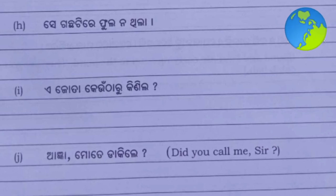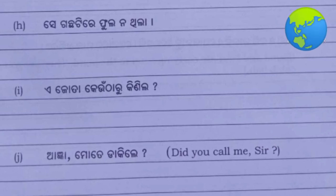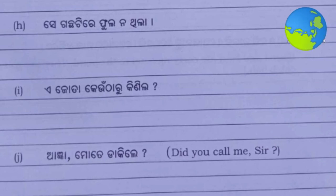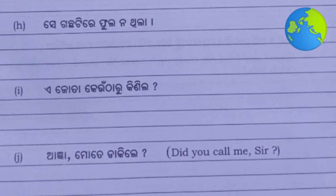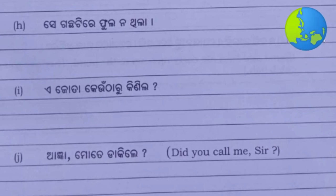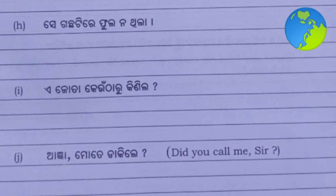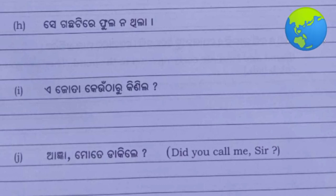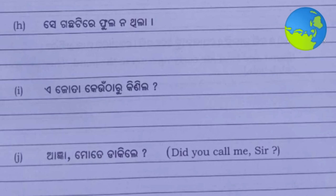Number H: 'Jota kiyan utharu khe nila' - translation: 'Where did you buy these shoes?'